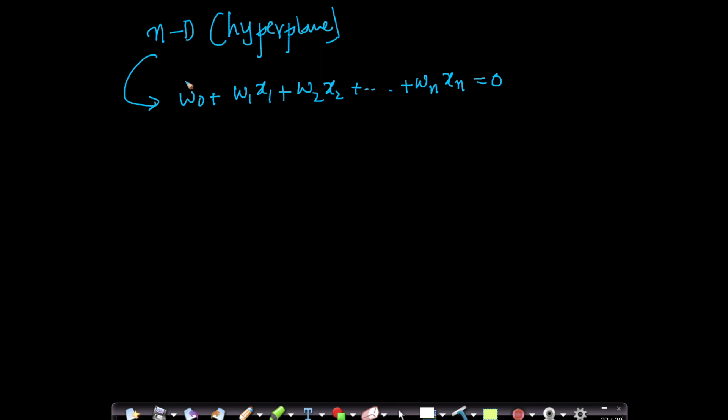Now, the immediate question we get is, this is too cumbersome to write. Is there a more concise way of doing it? Of course, there is. We can use summation here: summation i equals 1 to n, w_i x_i equals 0. This is certainly a much more concise way of writing the equation of hyperplane in n-dimensional space than writing out this whole expression.